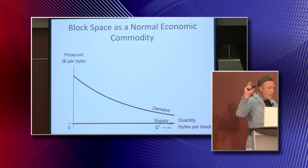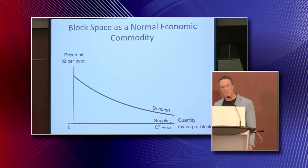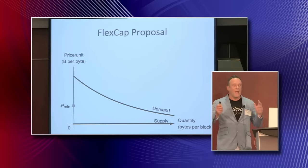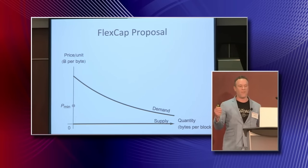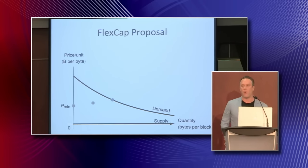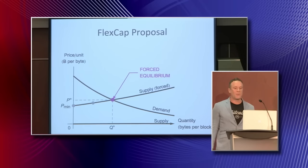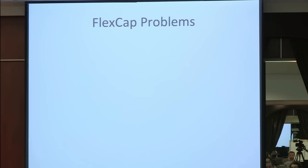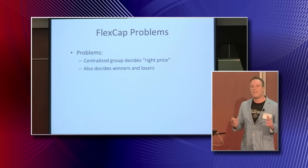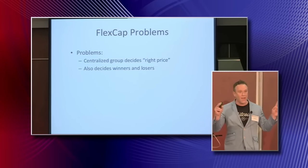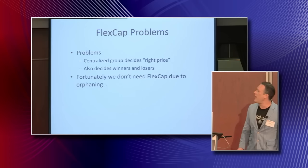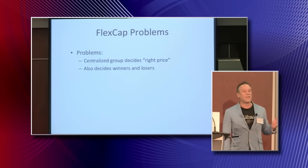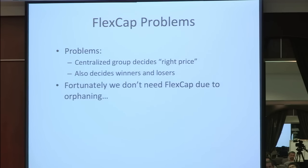To address this problem, there was a recent proposal called FlexCap. FlexCap is interesting because it basically artificially simulates the supply curve of a normal commodity. The idea is that the network would charge miners more and more the bigger they wanted to make their blocks, resulting in a forced equilibrium — a finite quantity of block space nonetheless. However, there's one big problem with FlexCap: it requires a centralized group of people to decide what is the right price for block space, and if a centralized group gets to decide that, they can also decide winners and losers by adjusting that price. Fortunately, we don't need FlexCap due to a phenomenon called orphaning.